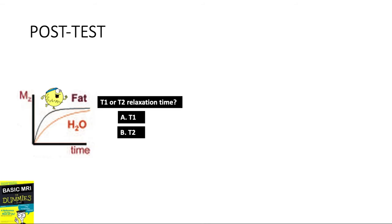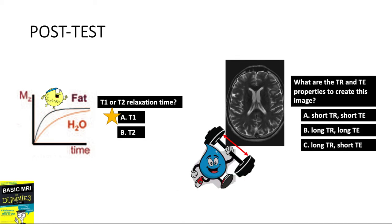Let's go back to our guide question. First, this graph shows what - T1 or T2 relaxation time? First clue here is in the graph, the longitudinal magnetization of the Z axis. It shows here that fat is quick to regain its longitudinal magnetization, so this is called the T1 relaxation time.